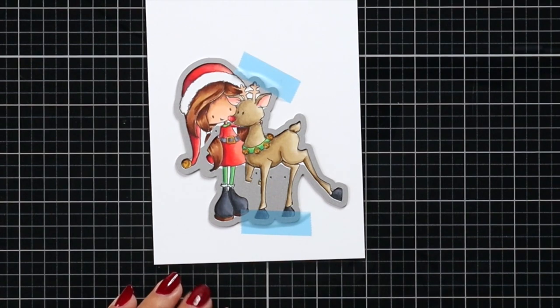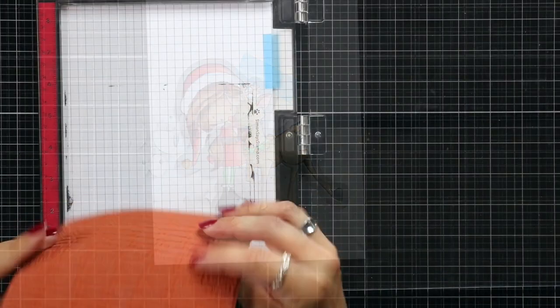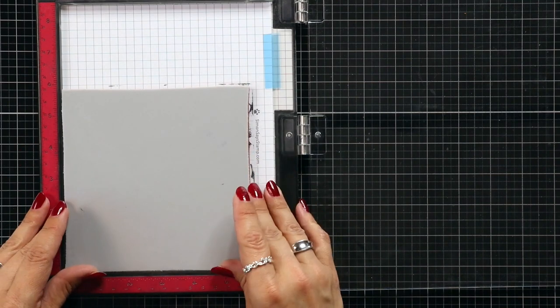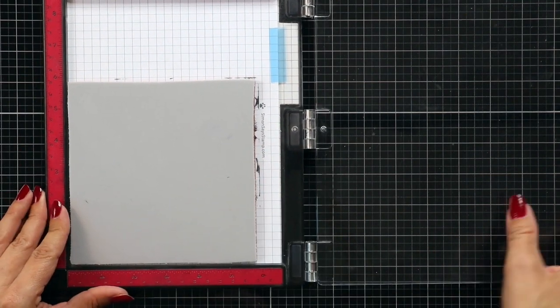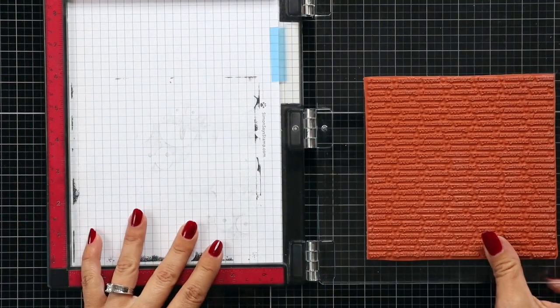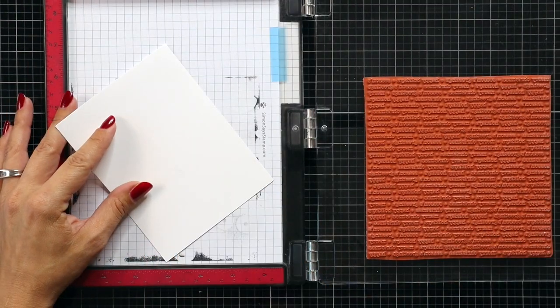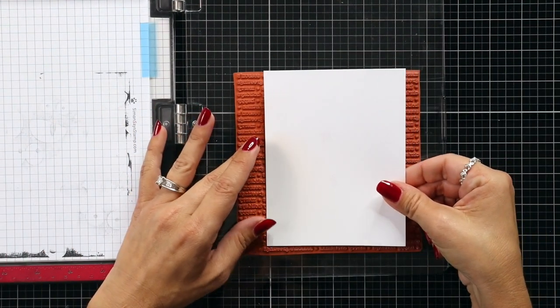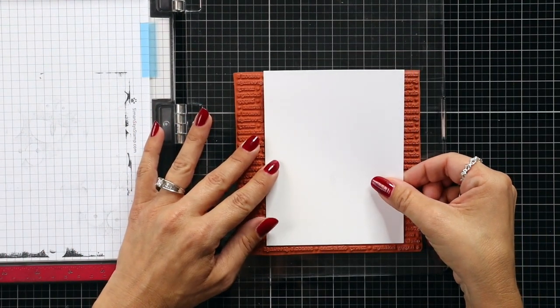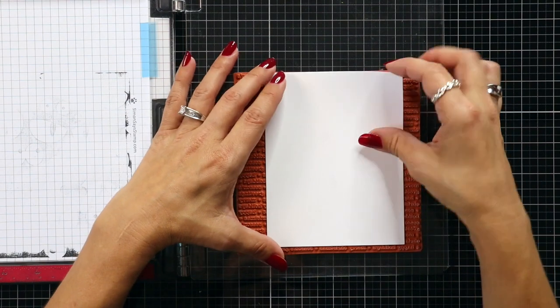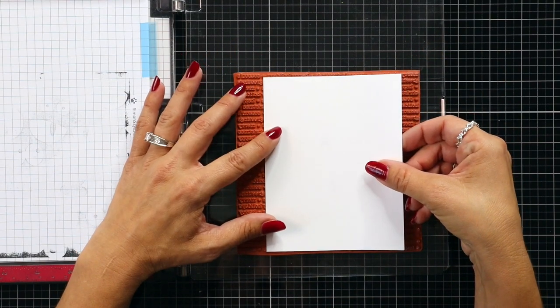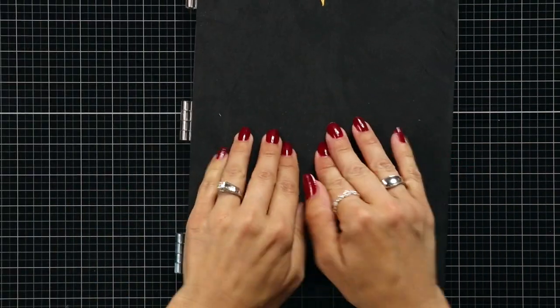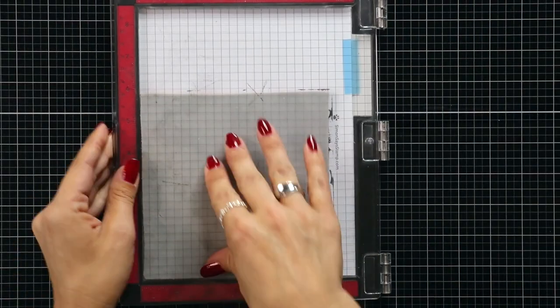I'm going to start working on my background. For the background I'll be using the Christmas Greetings background. This is a red rubber stamp, that means I'm going to remove the foam insert of my MISTI stamping tool. Now I'm taking a piece of white cardstock that's 80 pound. I put a little bit of removable adhesive on the back and then lining this up over the background. Once I feel that that is straight, I'm going to close my MISTI backwards to pick up that cardstock.